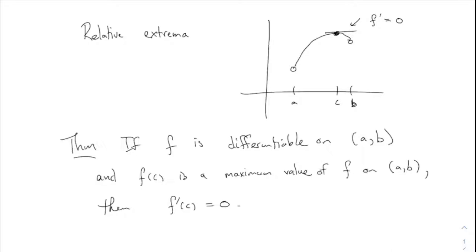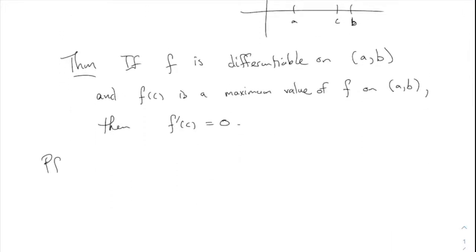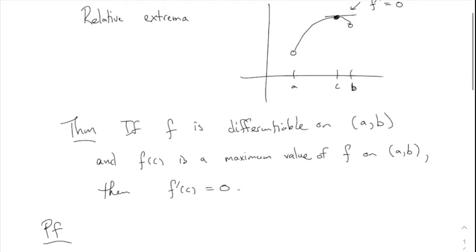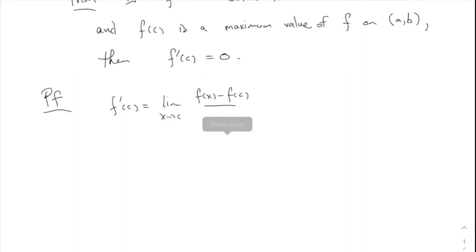The proof of this is kind of cute, kind of nice — not all that hard to understand. We assume all of that about the function and want to prove F prime of C equals zero. So we start with the definition: F prime of C is the limit as X goes to C of F of X minus F of C over X minus C. And we want to show that this limit is zero.